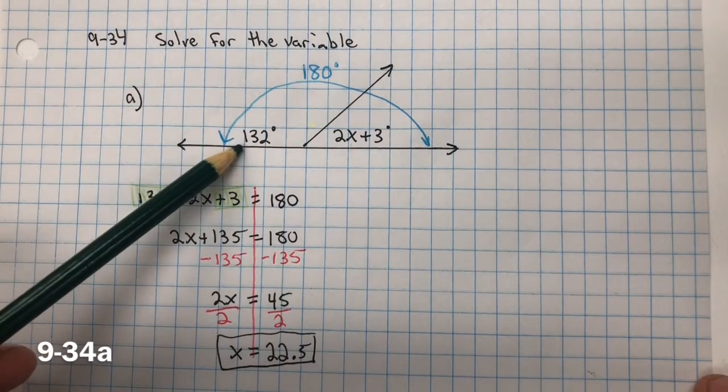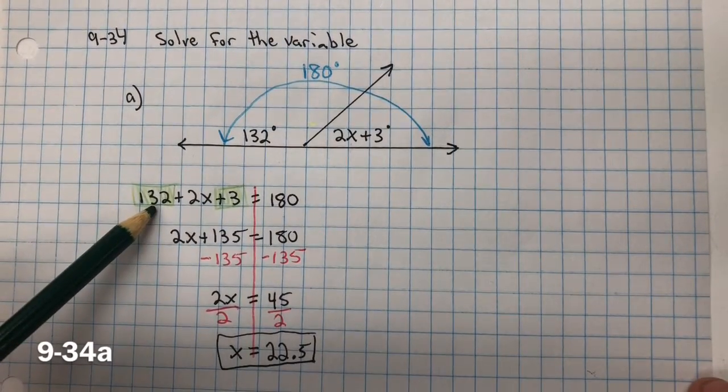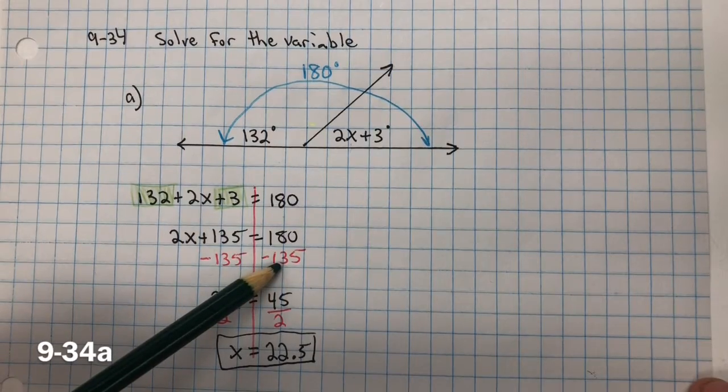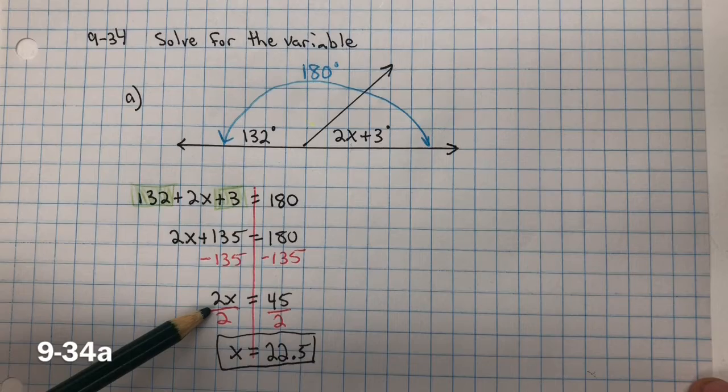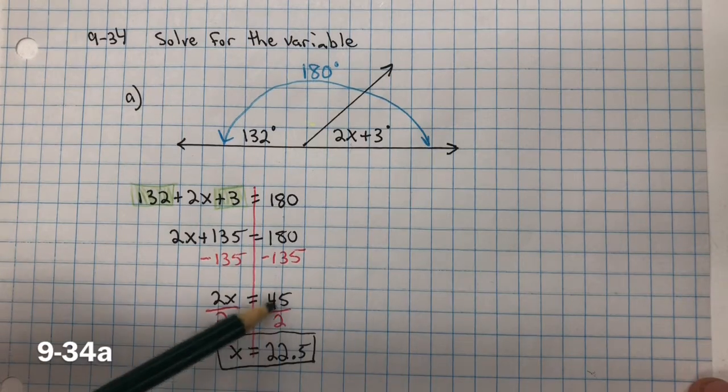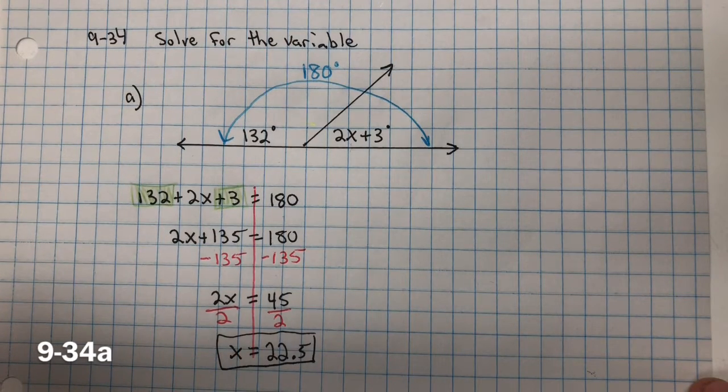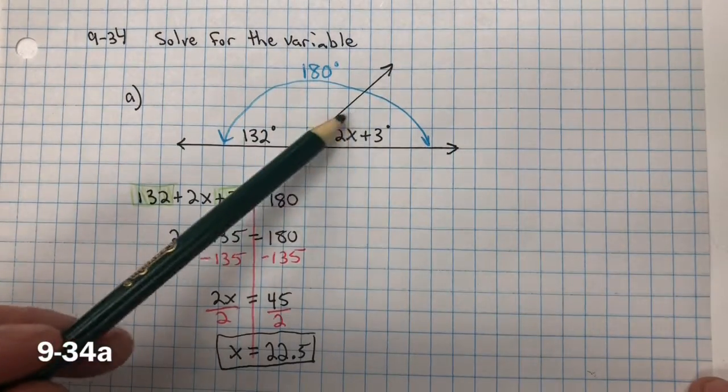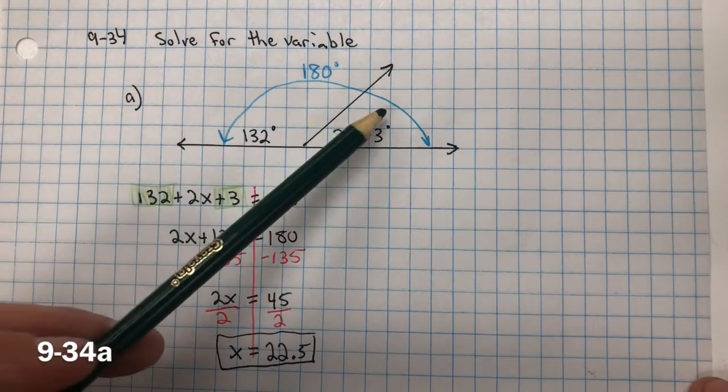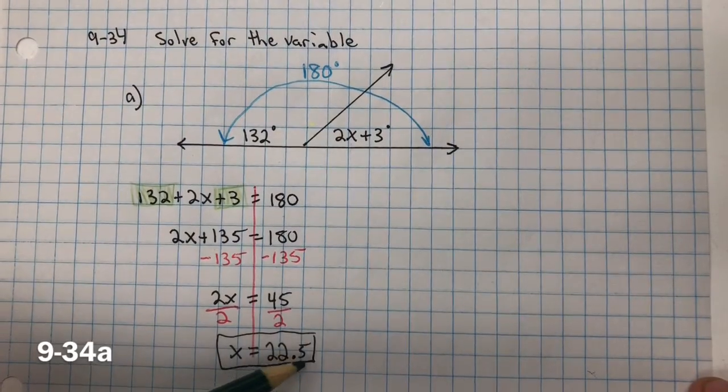So we know that 132 plus 2x plus 3 equals 180 degrees. Now we combine like terms, 132 plus 3 is 135. Inverse property of addition is subtraction. We subtract 135 from both sides, and we get 2x equals 45. Inverse property of multiplication is division. Divide both sides by 2, and 45 divided by 2 is x equals 22.5. If we needed to find this measure for this angle, 180 minus 132 would equal 48, this angle right here. But the directions were just stating to find the variable x.